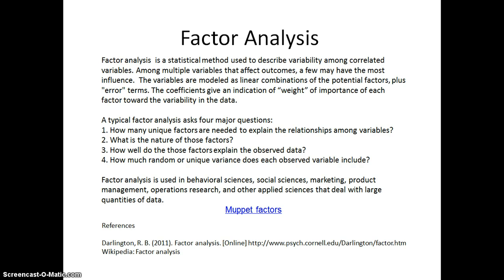A typical factor analysis asks four major questions: How many unique factors are needed to explain the relationships among our variables? What is the nature of those factors? How well do those factors explain our observed data? And how much random or unique variance does each variable include?